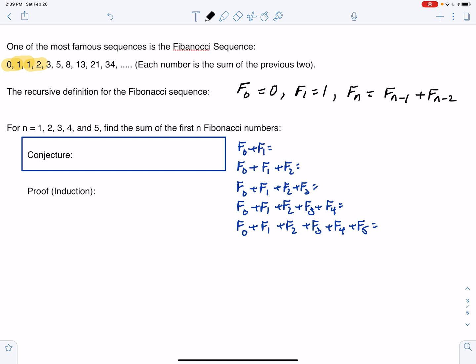So when N equals 1, the sum is 0 plus 1, which is 1. If we take the previous sum and throw F2 in there, that's going to be 2. If we take that sum and then add F3, that's 4, F3 being 2. If we take the previous sum and add in F4, which is 3, so that's going to be 7. And then if we add the next Fibonacci number, which is 5, we get 12.